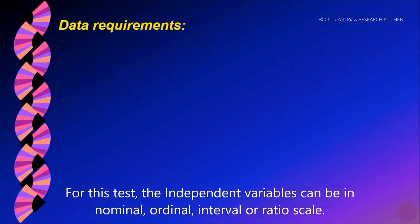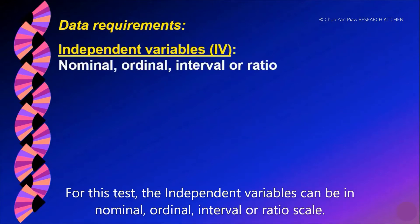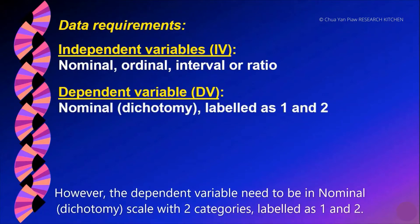For this test, the independent variables can be in nominal, ordinal, interval or ratio scale. However, the dependent variable needs to be in nominal, dichotomy scale with two categories, labeled as 1 and 2.